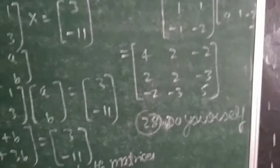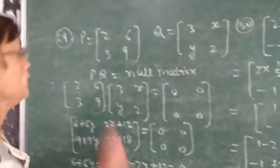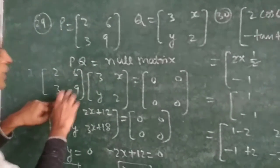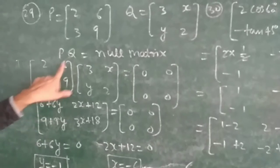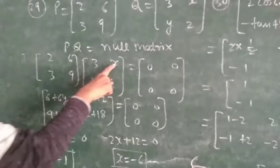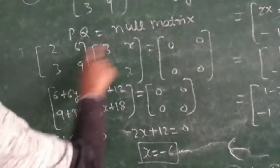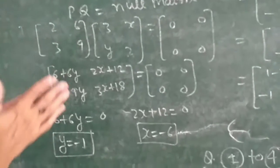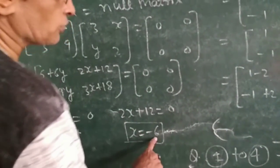The second part of question 27 and question 28 you have to do yourself — they are of the same type. Question 29: we are given matrix P = [2, 6, 9; ...] and Q = [3x; y; 2], and their product PQ equals the null matrix. We write the multiplication: [2, 6, 9] · [3x; y; 2] equals [0, 0; 0, 0], giving 2·3x + 6y and related expressions. These are the answers.